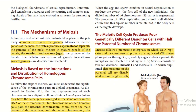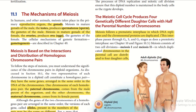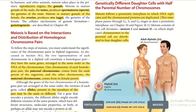The process of DNA replication and meiotic cell division ensures that this diploid number is maintained in the body cells as the zygote develops. The meiotic cell cycle produces four genetically different daughter cells with half the parental number of chromosomes. Meiosis follows a pre-meiotic interphase in which DNA replicates and chromosomal proteins are duplicated. There are two steps of cell division in meiosis: meiosis I and meiosis II, in which duplicated chromosomes in the parental cells are distributed to four daughter cells.